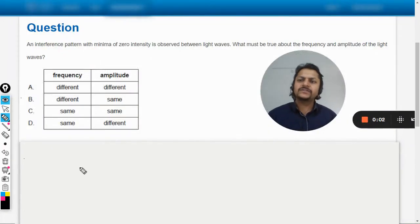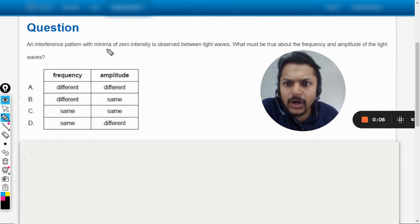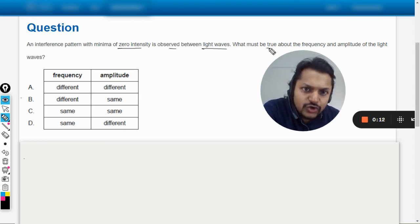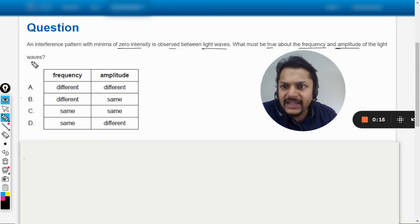Okay dear students, let us see what is in this question. An interference pattern with minima of zero intensity is observed between light waves. What must be true about the frequency and amplitude of the light waves?